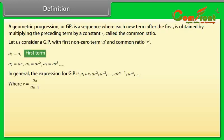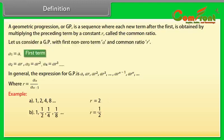Where R = Aₙ / Aₙ₋₁. Example: 1, 2, 4, 8, ... → R = 2. Another example: 1, 1/2, 1/4, 1/8, ... → R = 1/2. Another example: 1/4, −1/2, 1, −2, 4, ... → R = −2.